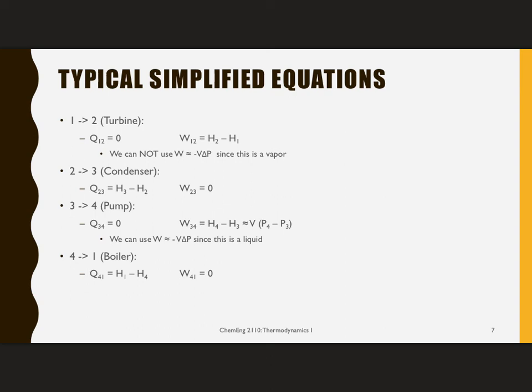For our boiler, it's kind of the similar analysis of the condenser, but we are adding heat into the system, so I should have a positive Q. It's H for the exit is 1, H for the inlet is 4, so Q for the boiler is H1 minus H4, and there will be no work because there are no moving parts.